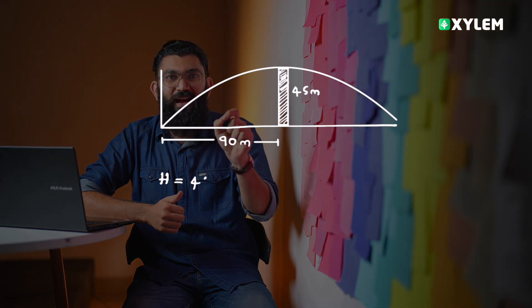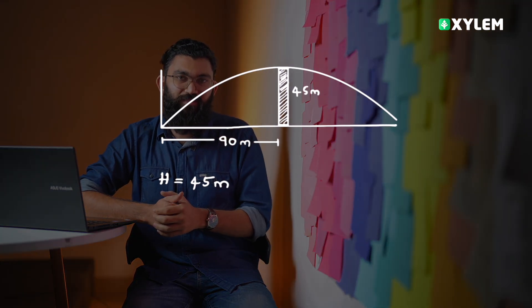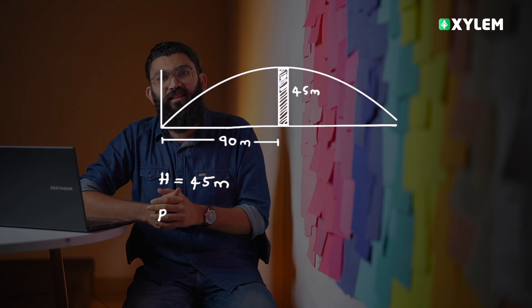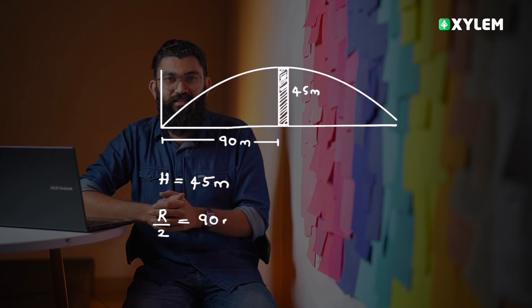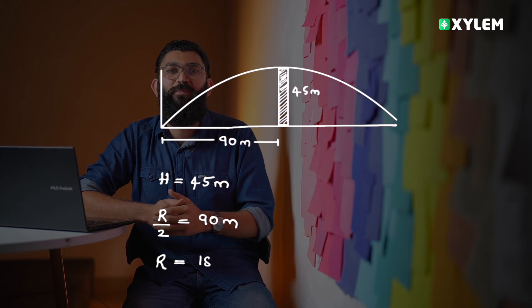The projectile motion has the maximum height of 45 meter. And similarly, you can see this diagram, the range is 90 meter. So the range of projectile motion will be 180 meter.